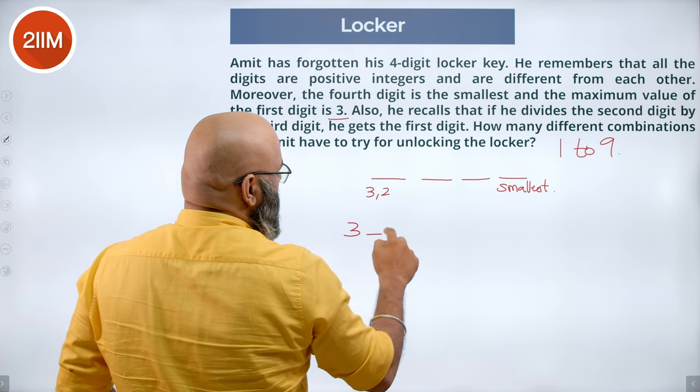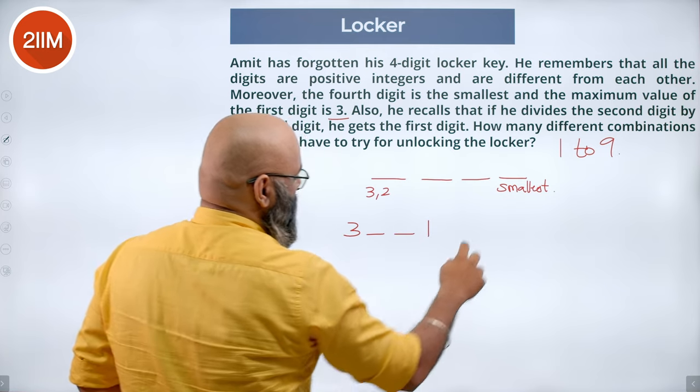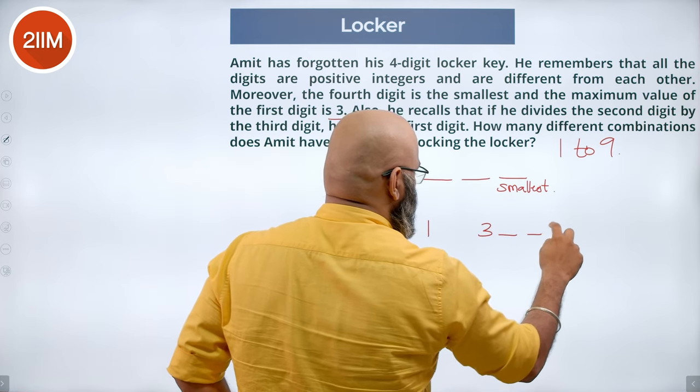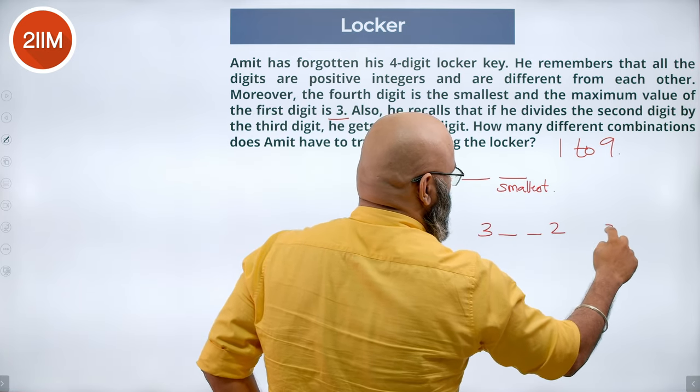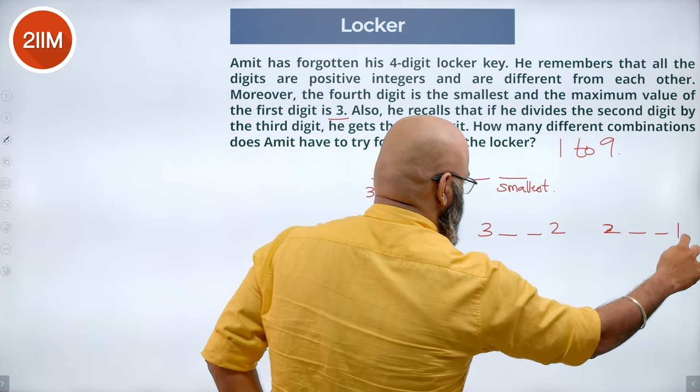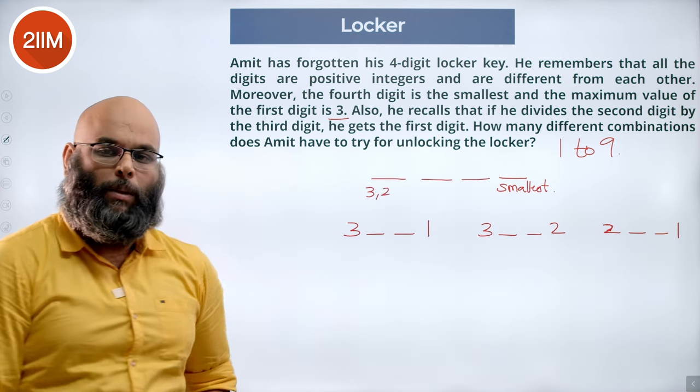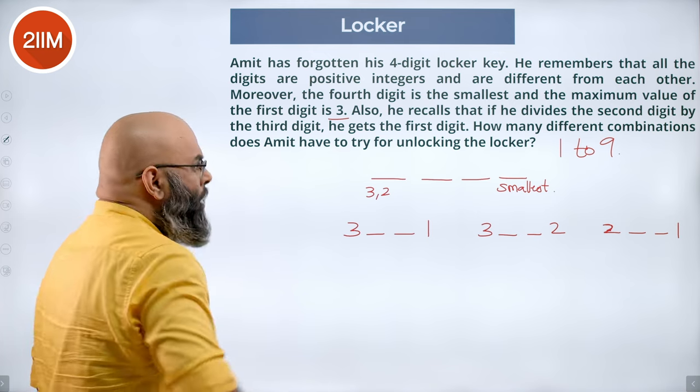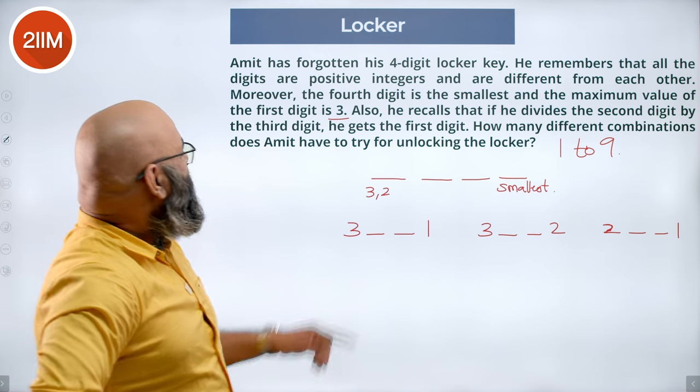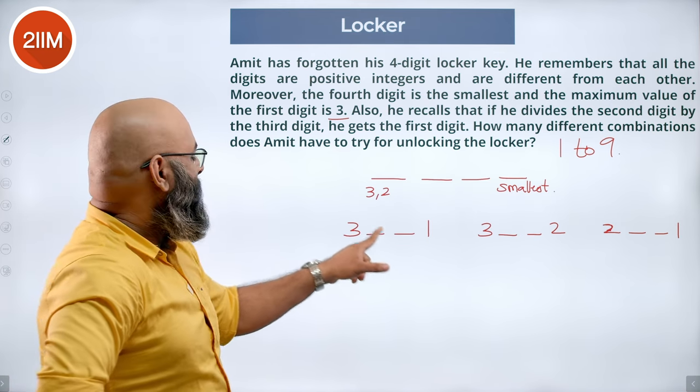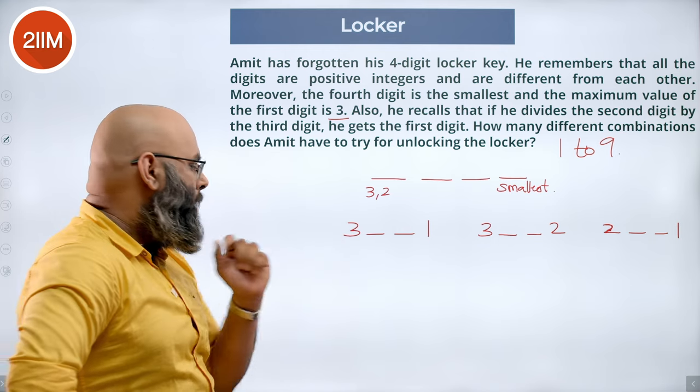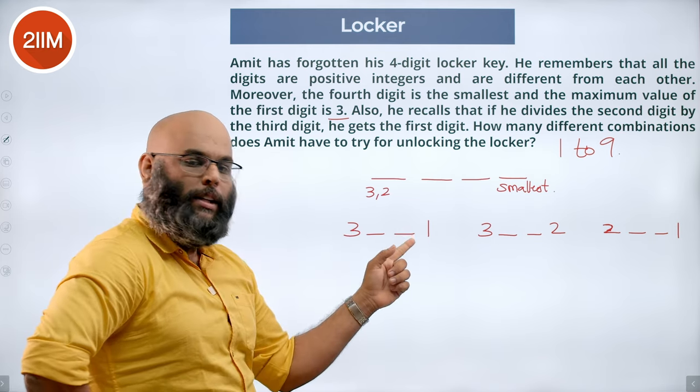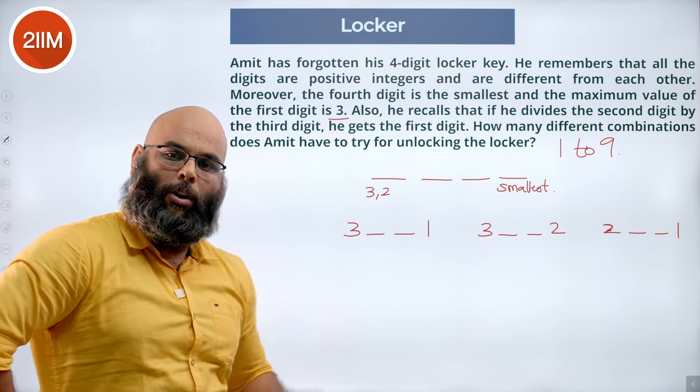We can say if the first digit is 3, the last digit can be 1. The first digit is 3, the last is 2. The first digit is 2, the last is 1. We are ending up with any of them. So we look at it. It also says if he divides the second digit by the third digit he gets the first, or rather we multiply the first and the third digit we get the second digit. We are looking at it that way.